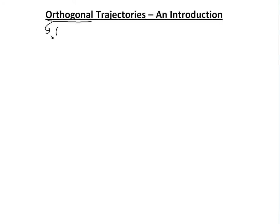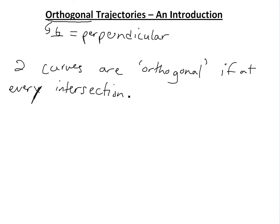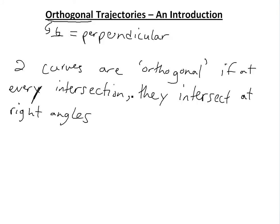So basically, 'orthogonal' means perpendicular, or a right angle — that's what the word orthogonal means. Two curves are called orthogonal if at every intersection they intersect at right angles or are perpendicular.